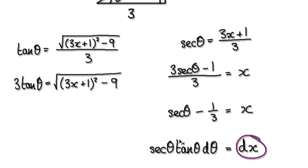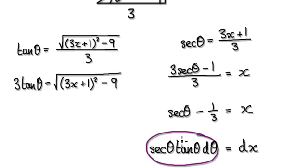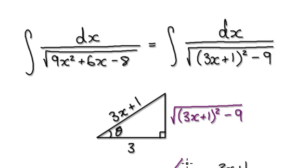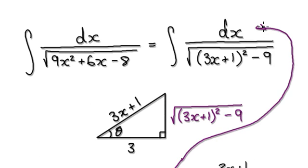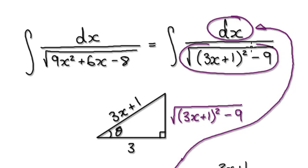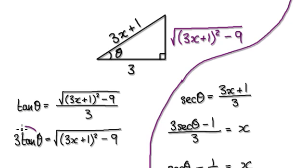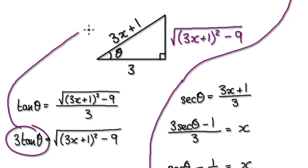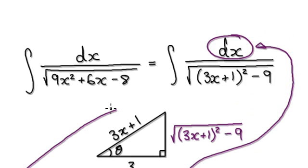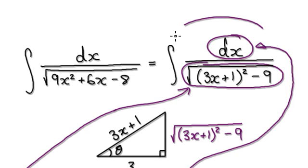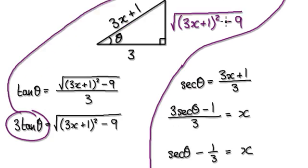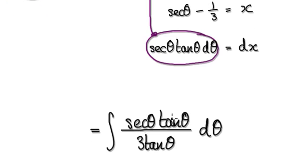So here you've got your dx equals this thing here. We can then put this back into the dx here, back into here. And then this complicated thing here — the complicated thing is 3 tan theta. So we can put 3 tan theta back into this complicated thing here. So this whole thing here will then become this.